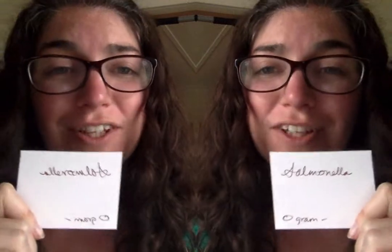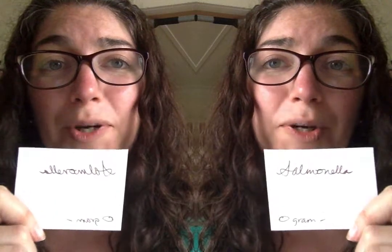Shiga toxin-producing E. coli can cause really bad diarrhea, but it can also cause kidney failure. Salmonella is another foodborne pathogen that can make you sick, causing diarrhea and intestinal distress. Salmonella is found naturally in a lot of animal guts — fish, birds — so contaminated raw or undercooked fish, bird foods, or eggs can be sources of salmonella. Make sure your meat, eggs, and fish are all well cooked, especially on the surface.